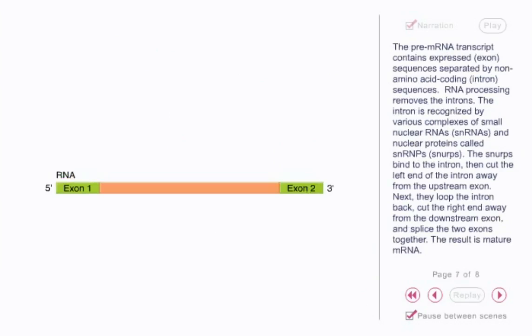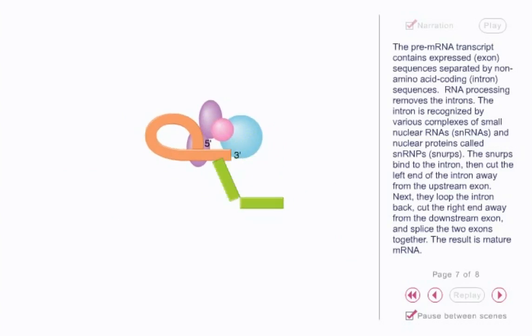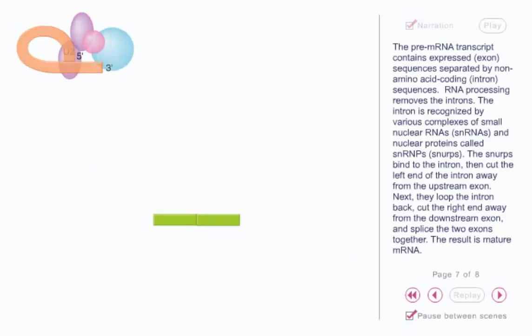The pre-mRNA transcript contains expressed exon sequences separated by non-amino acid coding intron sequences. RNA processing removes the introns. The intron is recognized by various complexes of small nuclear RNAs and nuclear proteins called SNRPs. The SNRPs bind to the intron, then cut the left end of the intron away from the upstream exon. Next, they loop the intron back, cut the right end away from the downstream exon, and splice the two exons together. The result is mature mRNA.